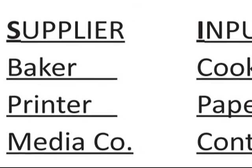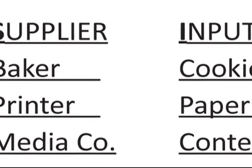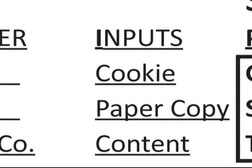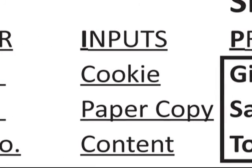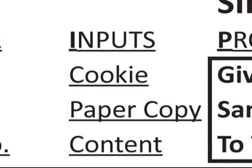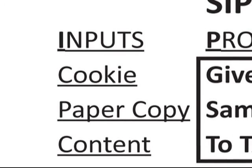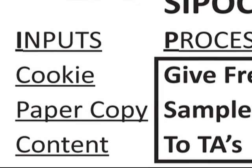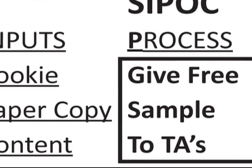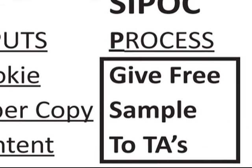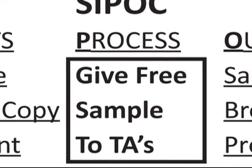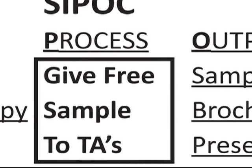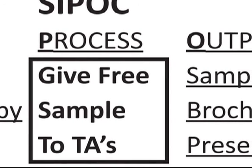The next column lists the inputs provided by the supplier. In this case you can see it's the cookie, the paper copy brochure, and of course the content for both the brochure and the presentation. This next column is simply the process step, which is why it's listed in a box. In this example it's giving away a free sample of the cookie and brochure after the live presentation and a lead swipe.